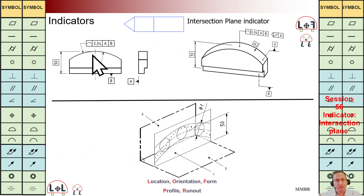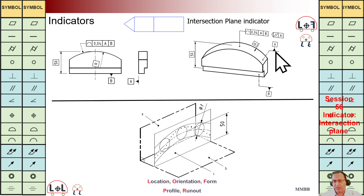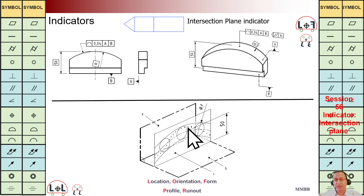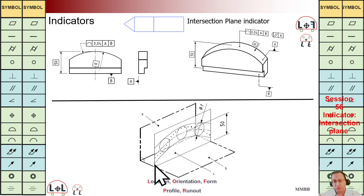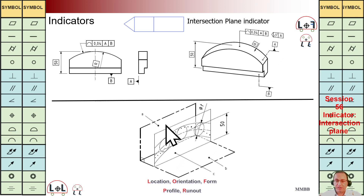Let's see another example. We have a profile of a line here and this intersection plane indicator. We are going to have several planes parallel to A. We need to extract the curves between those parallel planes and this top surface. Each of them should be within that tolerance zone 0.04 — we are going to have two parallel curves here, and each extracted curve should be within that tolerance zone. It means in that direction — plane parallel to A — we are going to extract the curve.